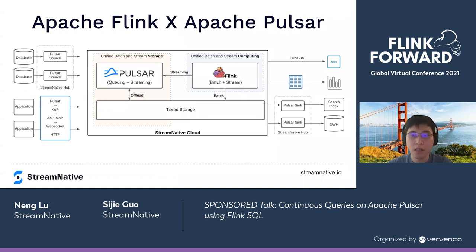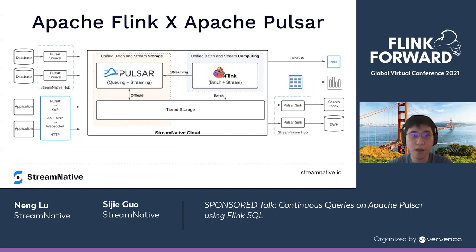Here is an architecture diagram showing how Apache Flink and Apache Pulsar work together on Stream Native Cloud. Pulsar offers unified batch and stream storage, so Flink can fetch real-time streaming data from Pulsar brokers directly. It can also read batch data from tiered storage offloaded by Pulsar itself, and together they cover most of today's use cases.